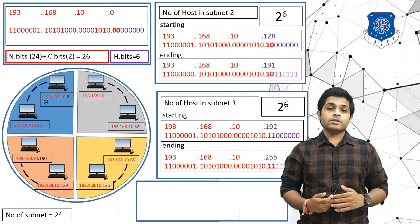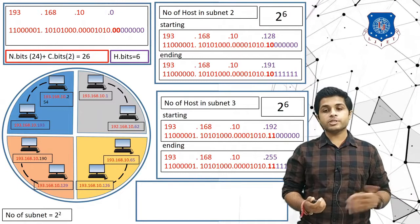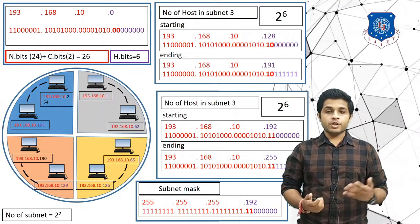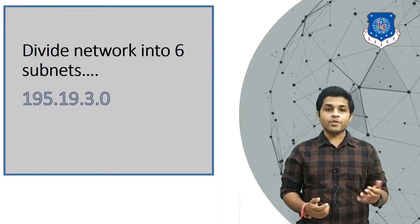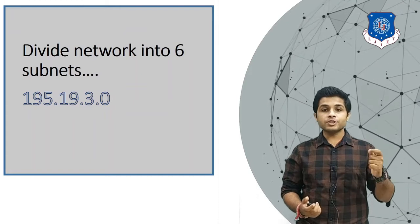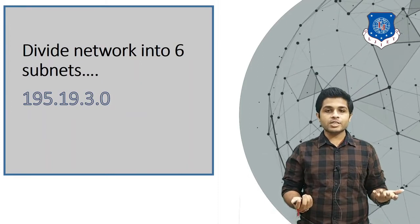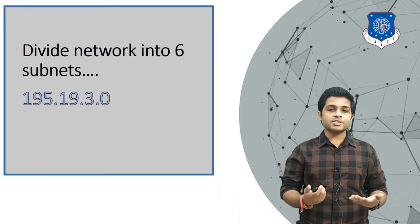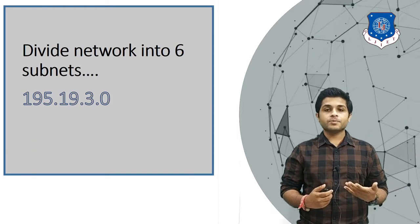To find the subnet mask, we set all network bits to 1 and all host bits to 0, giving 255.255.255.192. Now, as a practice example, you need to divide a given Class C network into six subnets and find the first and last usable address in each subnet. In the upcoming session, we will see more examples for Class A and Class B. Thank you.